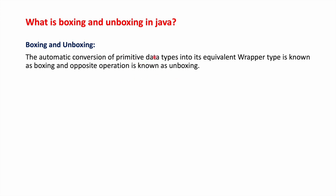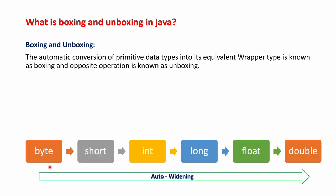For example, the primitive type int has a corresponding wrapper class Integer. So the automatic conversion of int to Integer is called boxing, and the reverse operation — that is, Integer to int — is called unboxing.